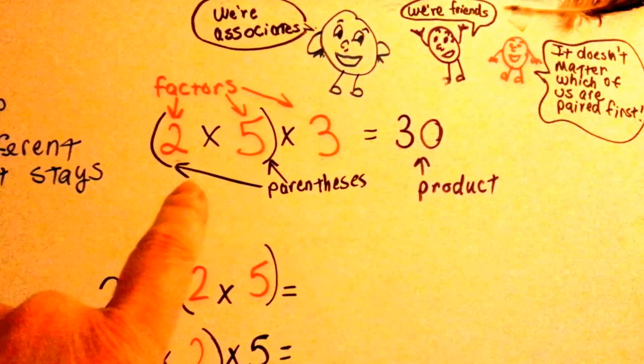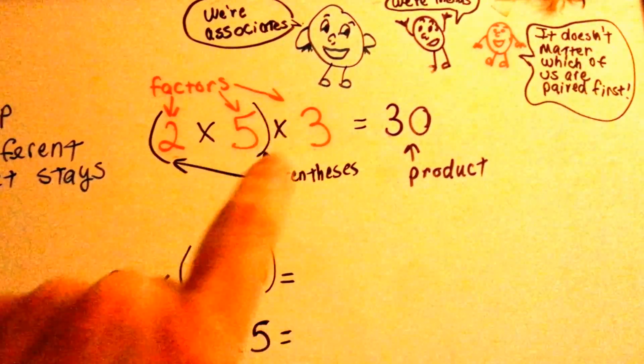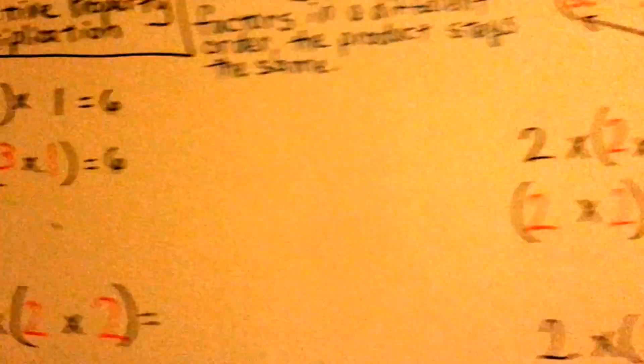So it doesn't matter in the associative if the parentheses are around these first two or if it's around the five and the three, the answer will stay the same. So let's look.